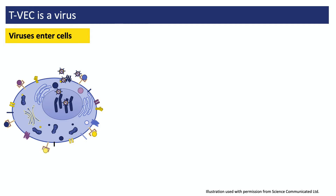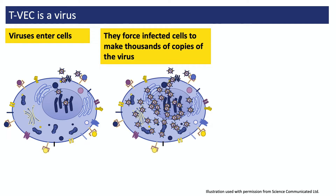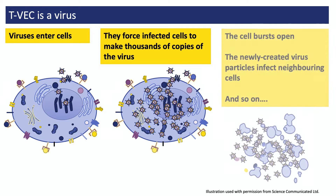Viruses are completely natural and there are thousands of different ones. They can't multiply on their own, so what they do is infect a host cell by first attaching to a protein sticking out from its surface. Once inside the cell, they instruct it to make thousands of extra copies of the virus. Eventually the cell bursts open, releasing thousands of new copies of the virus into its surroundings. These new virus particles infect and destroy neighboring cells, and so the infection spreads through the tissue.